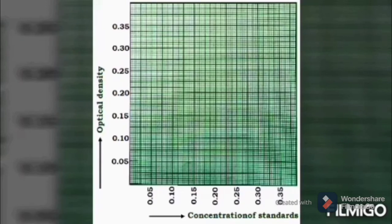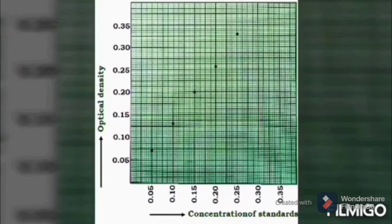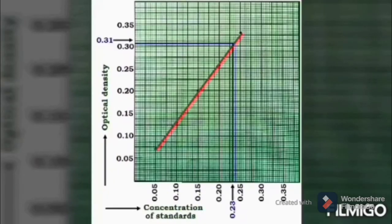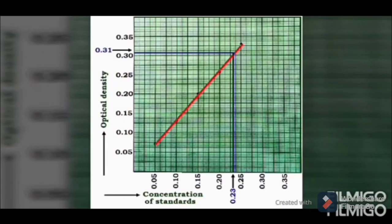This is finding result from graph. ODs are taken on the y-axis, concentration of standards taken on x-axis. Spots are connected using a curve; you can include the zero point also in this graph. From the OD of T1, 0.31, we get a concentration of 0.23 milligram per ml. The result from graph, which employs the values of five standards, is considered more accurate than taking a single standard for calculation using a formula, and the values need not always be exactly the same.